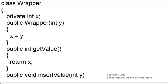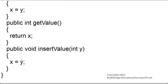So we have to create our own wrapper class, as given here. Within this class we have declared the variable x as private integer, so it cannot be accessed outside this class. A constructor is defined where x is equal to y, that is the initialization of x. A method getValue is defined which returns x, and another method insertValue is defined in which the value of y is assigned to x.